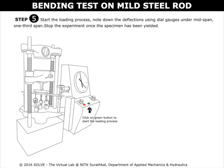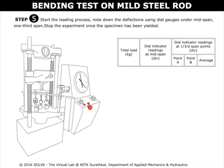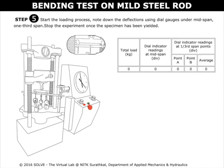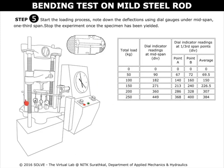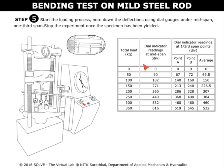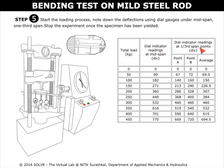Click on the green button to start the loading process. Now note down the deflection using dial gauges under the mid-span as well as the one-third spans.